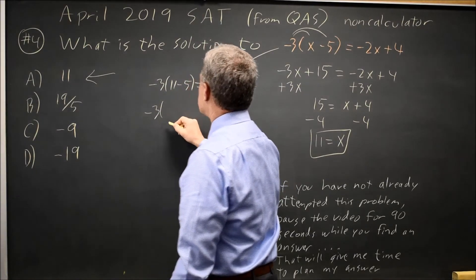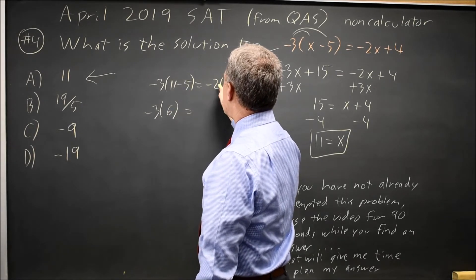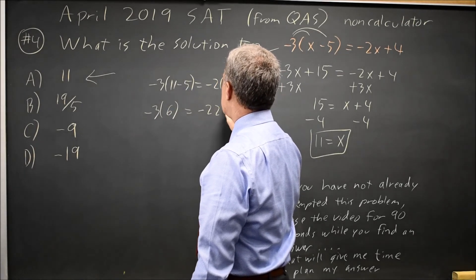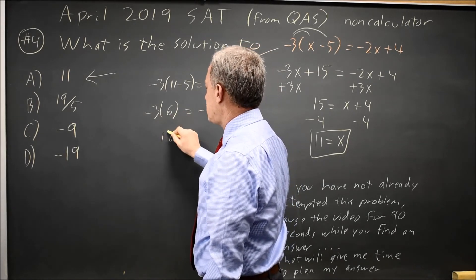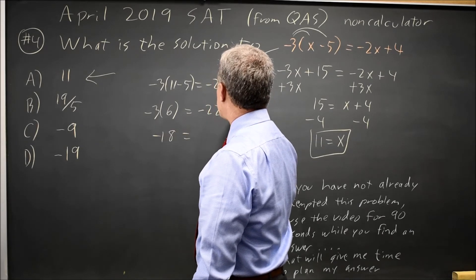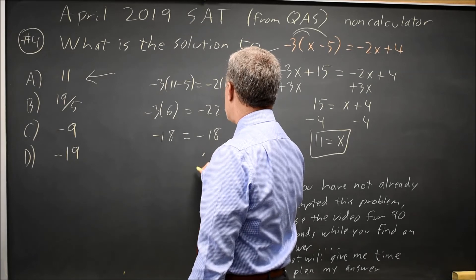Negative 3 times parentheses first, 11 minus 5 is 6, equals negative 2 times 11 is negative 22 and then plus 4. Negative 3 times 6 is negative 18. Negative 22 plus 4 is also negative 18. So that was the correct answer.